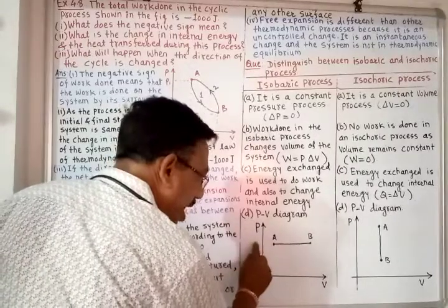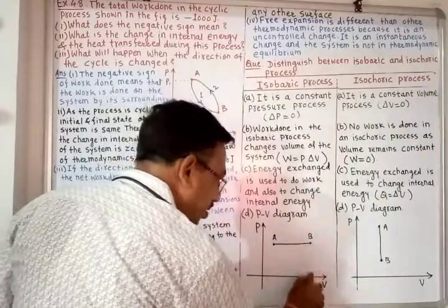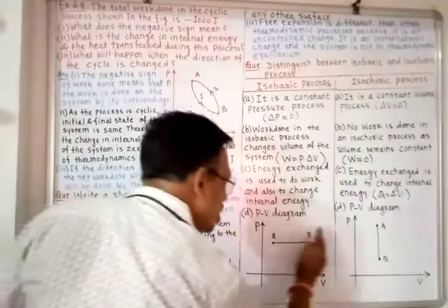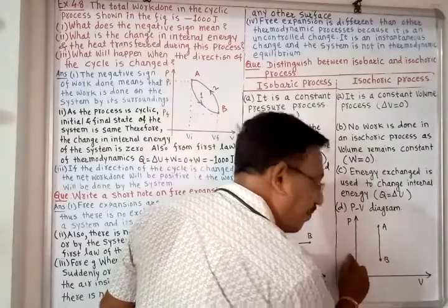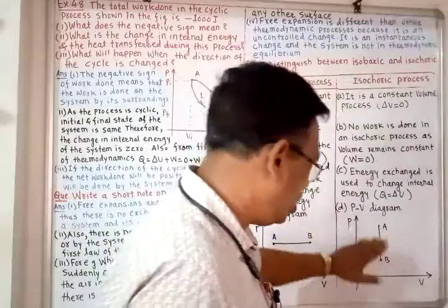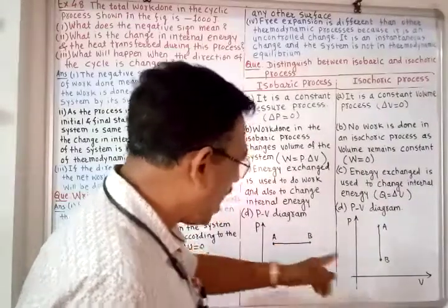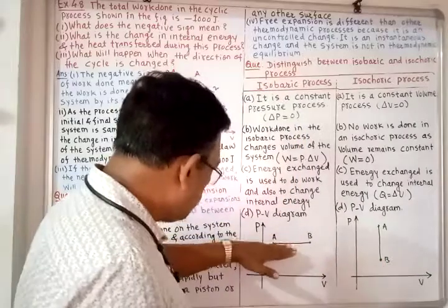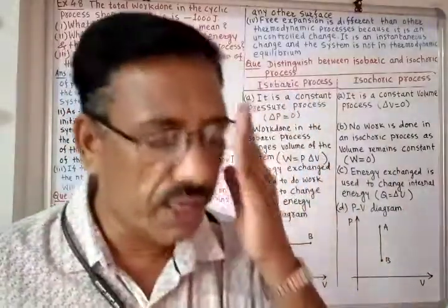For the PV diagram: in an isobaric process, pressure is fixed, so the graph is parallel to the x-axis — pressure is constant but volume changes from initial to final value. In an isochoric process, volume is fixed, so the graph is parallel to the y-axis — volume is constant but pressure changes from initial to final. This is where we will stop now.